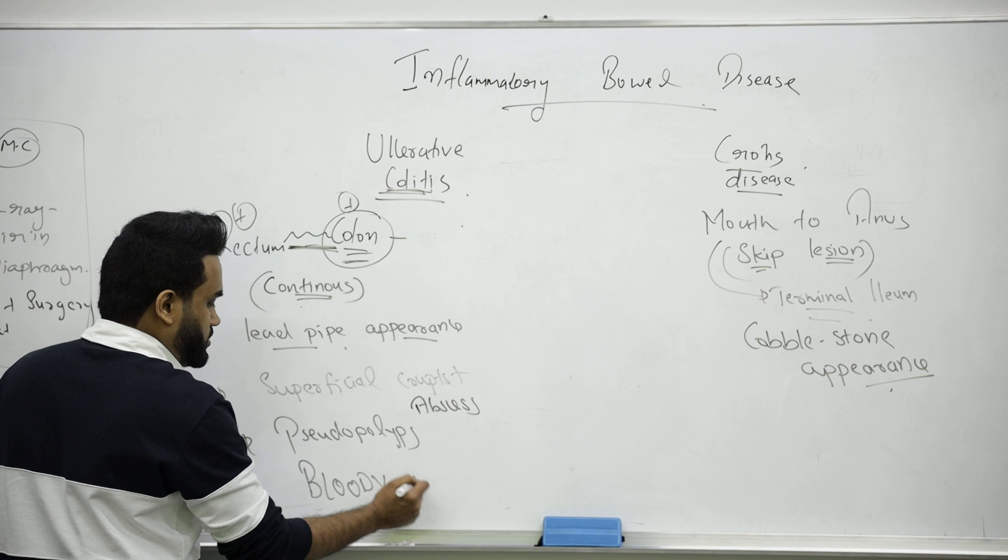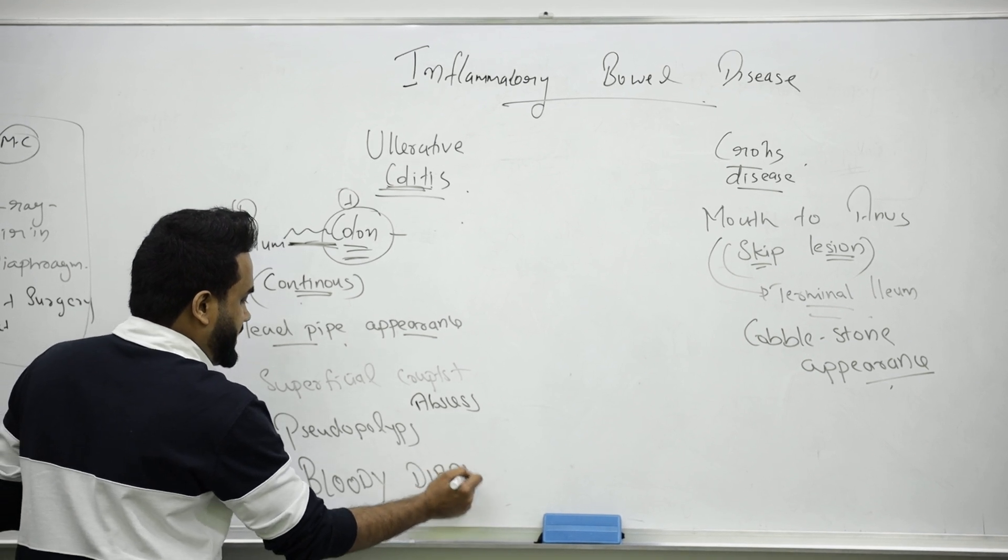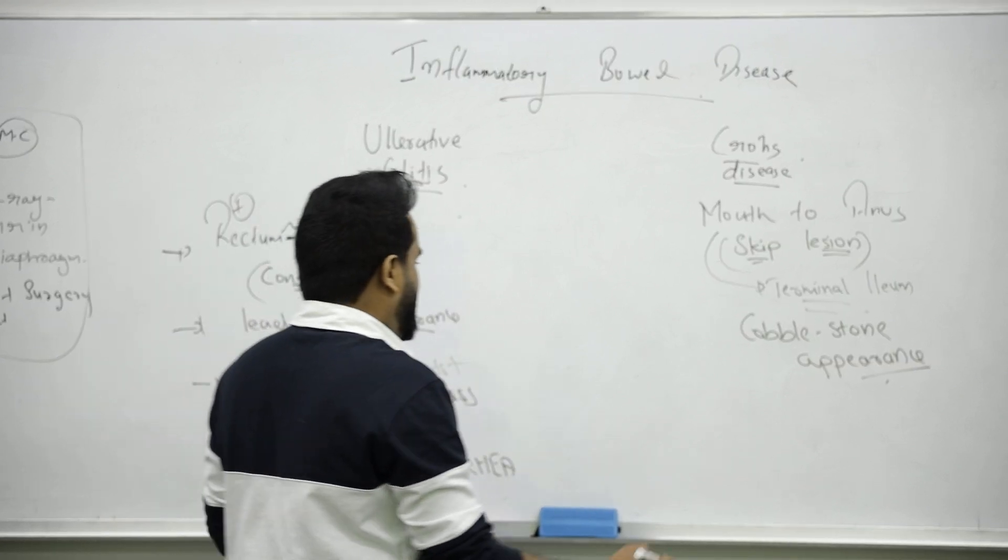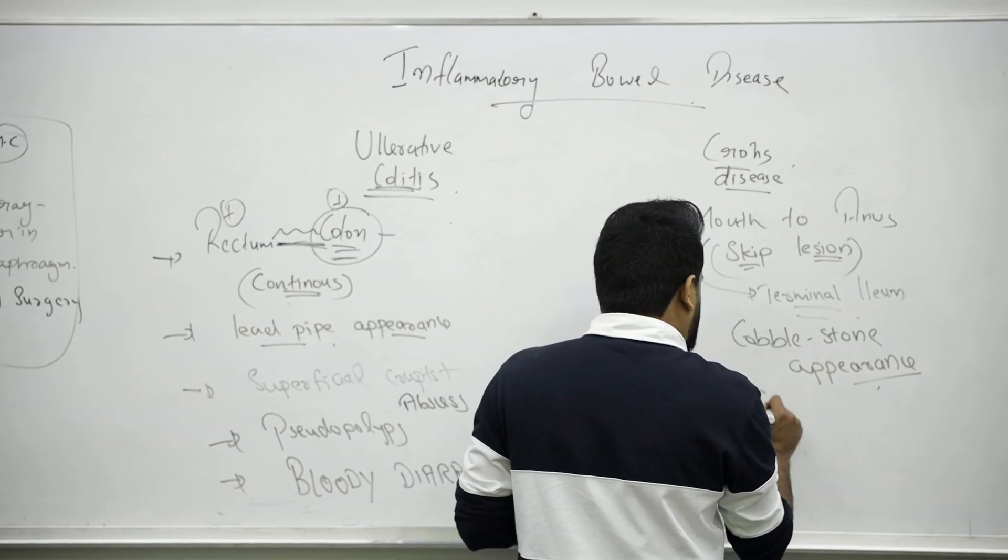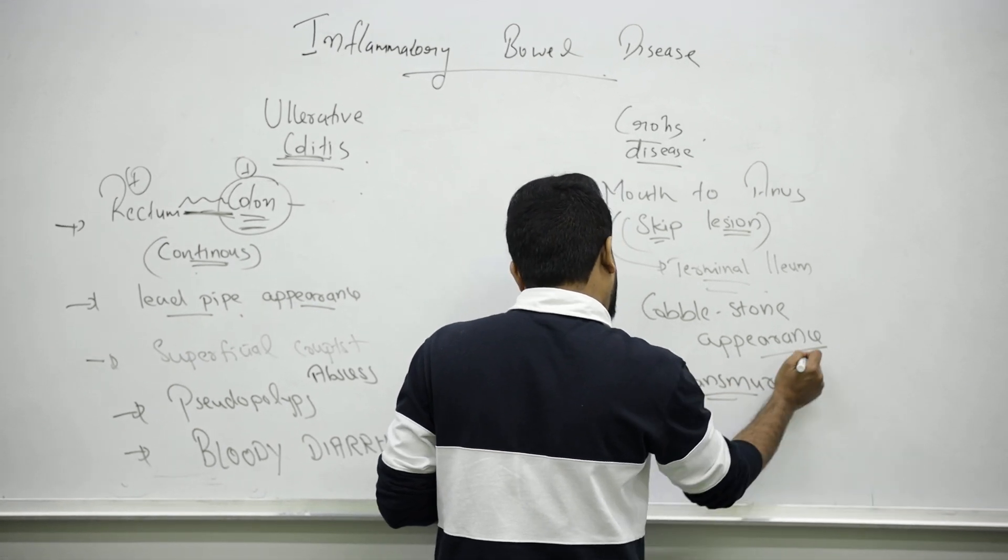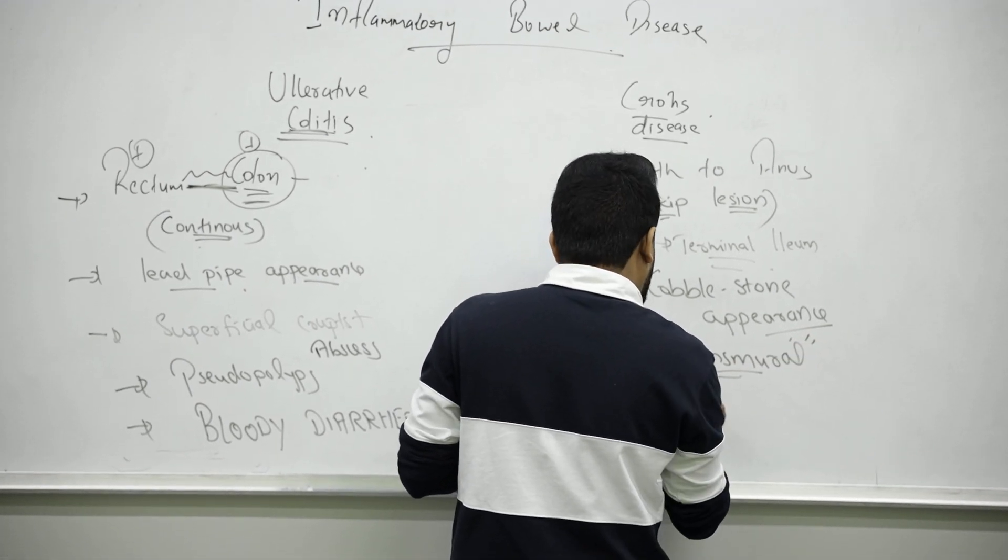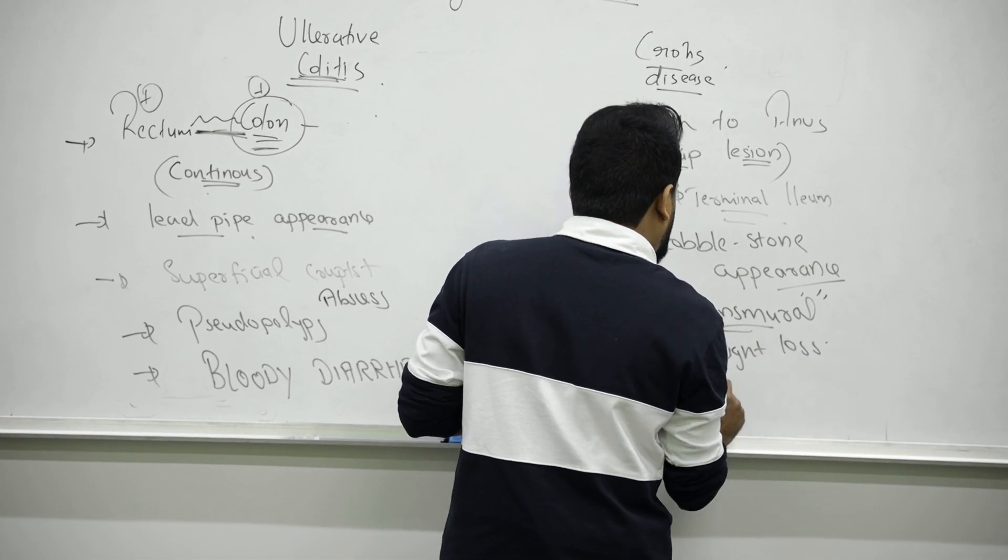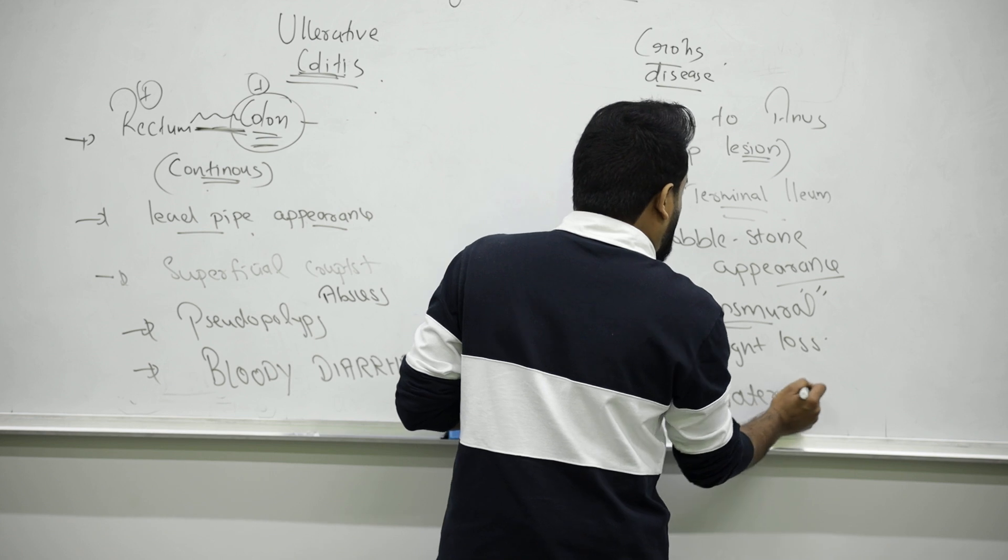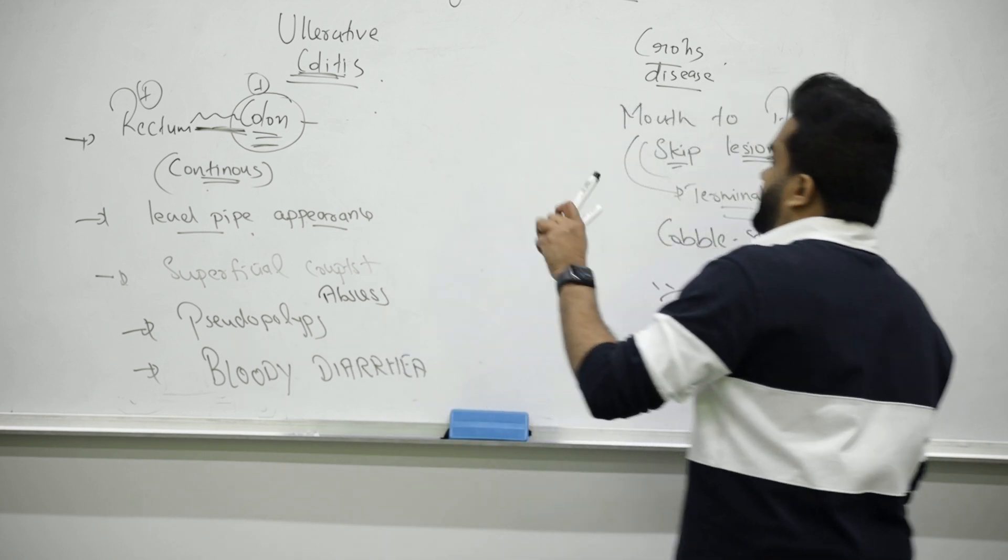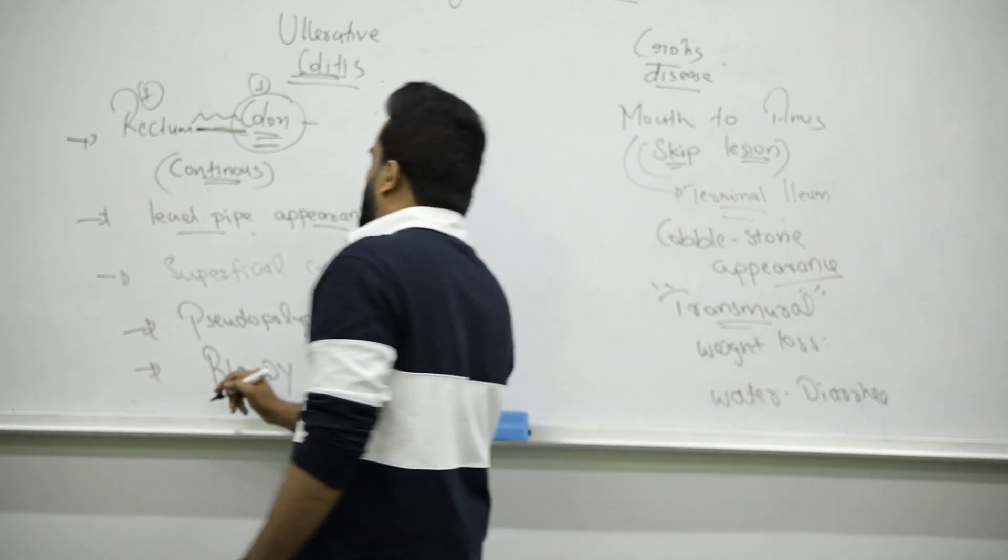But talking about Crohn's, it is more deep. They affect all walls of the intestine - it is called transmural. Every wall is affected. It will cause you weight loss along with watery diarrhea, not bloody. So in any exam, if they ask you bloody diarrhea and you have to choose between Crohn's and ulcerative, the answer is always ulcerative colitis.